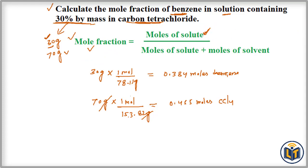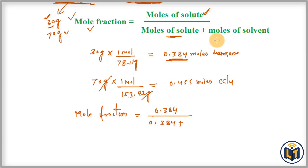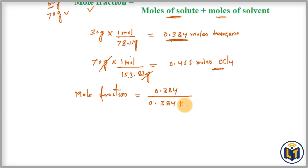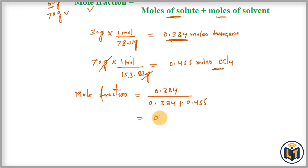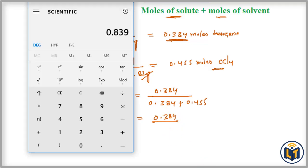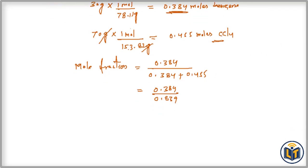The mole fraction is equal to moles of solute (benzene) which is 0.384, divided by moles of solute (0.384) plus moles of solvent carbon tetrachloride (0.455). Adding the denominator values: 0.384 plus 0.455 gives us 0.839. So we have 0.384 divided by 0.839.